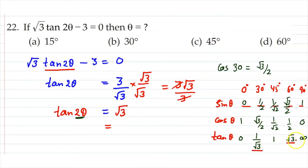If root 3 is a larger value, then the angle is larger — the value of tan 60° is √3. The smaller angle 30° gives the smaller value 1/√3.